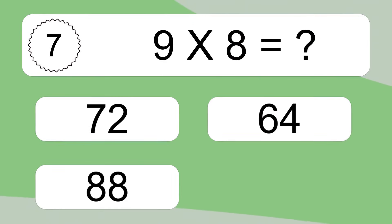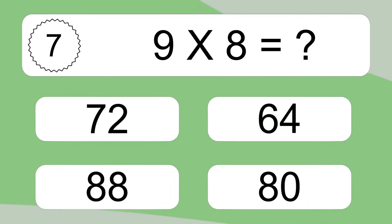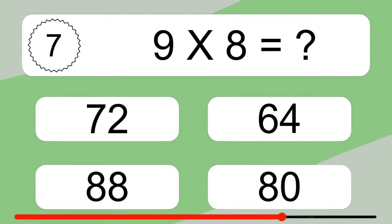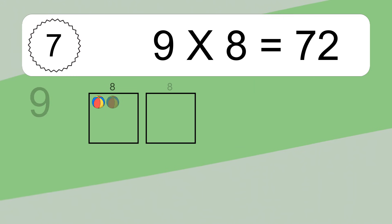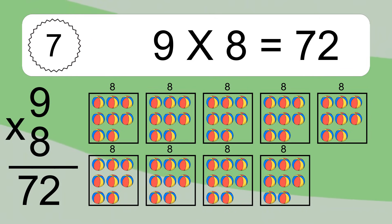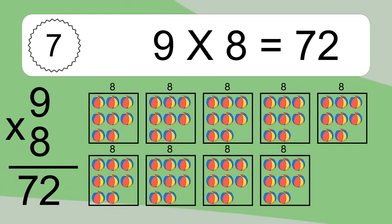9 times 8 equals what? 9 times 8 equals 72. We have 9 boxes, and each box has 8 colorful balls inside. If you count all the balls in all the boxes together, you will have 9 times 8 balls. This equals 72 balls.